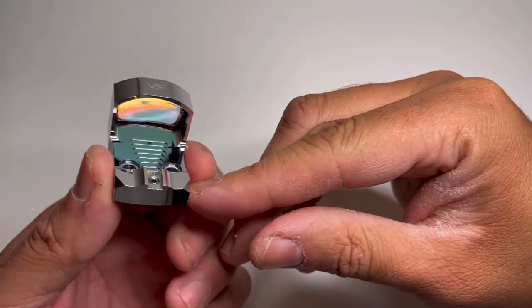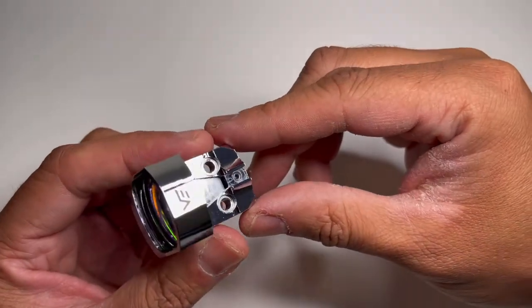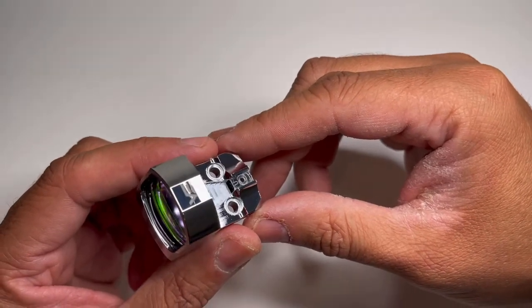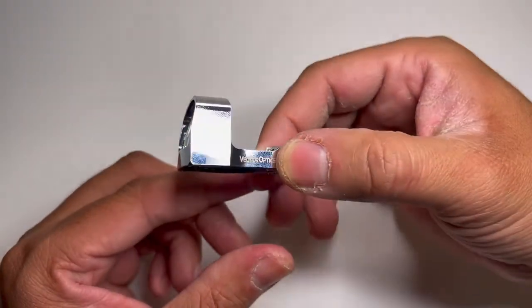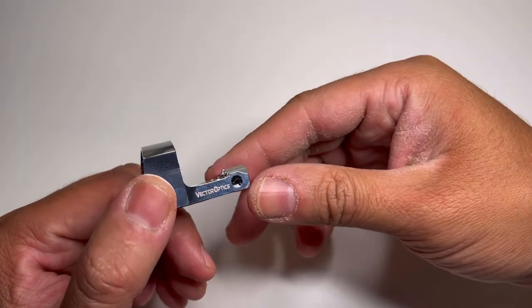This one is an auto brightness model, so really nice. It's always on. As you can see, it carries the same design as the SCRD-52, which is the black version.